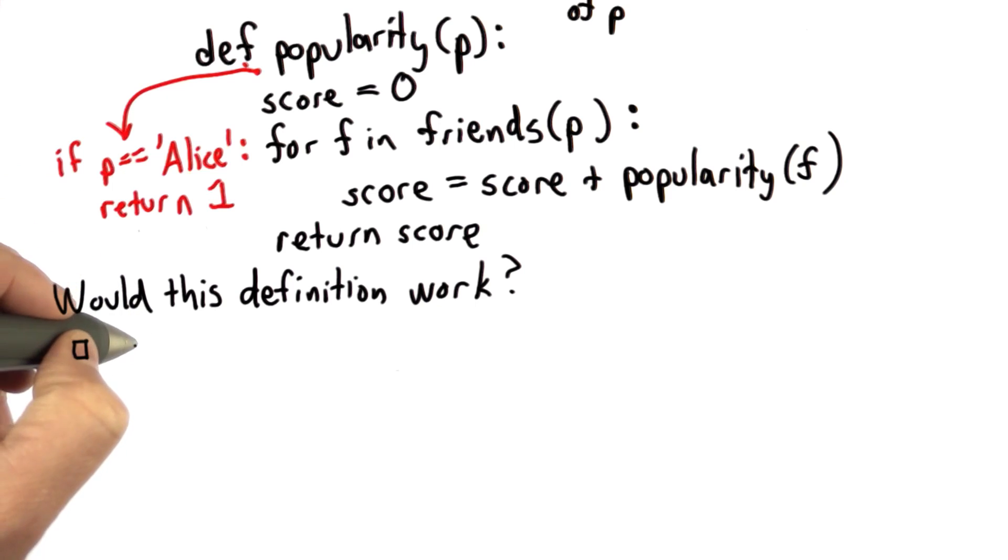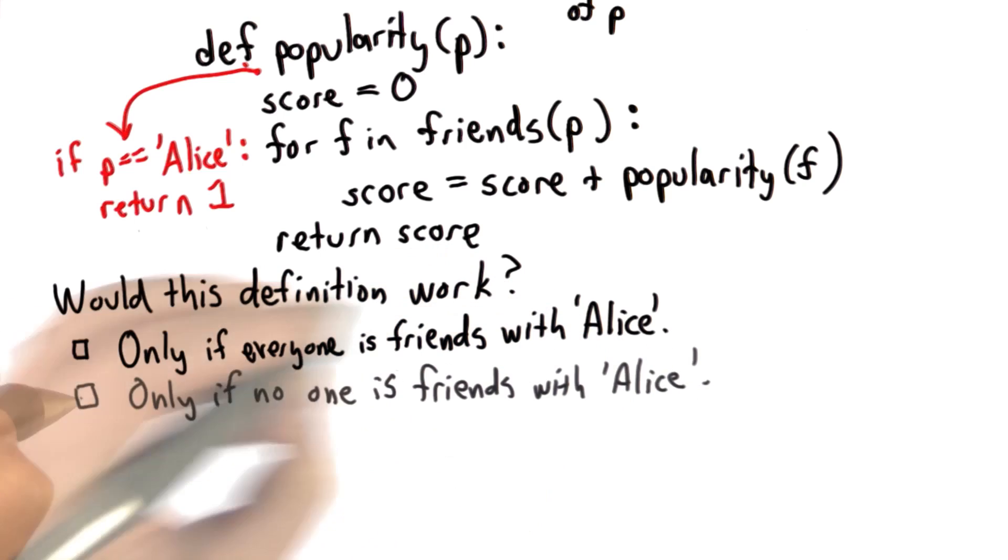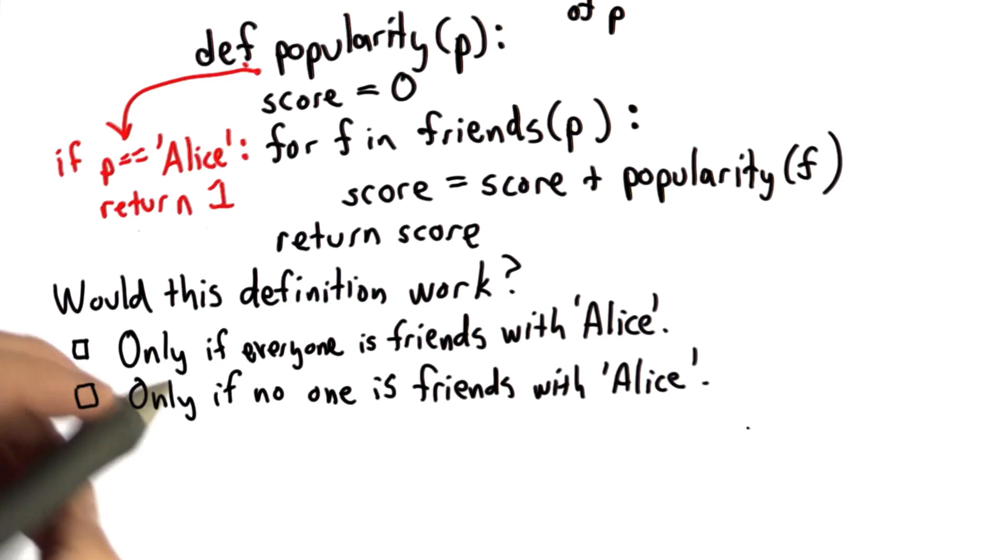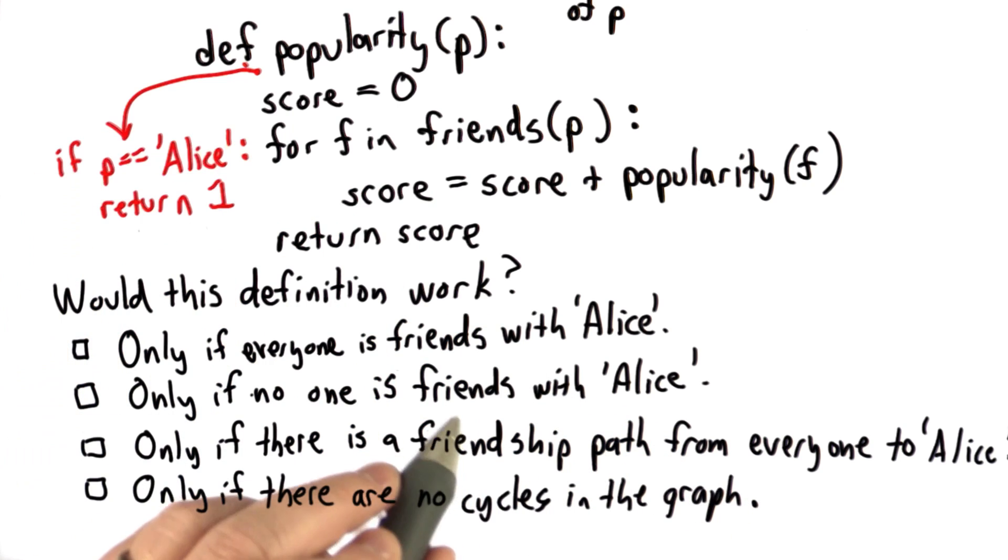The possible answers are only if everyone is friends with Alice, only if no one is friends with Alice, only if from every person in the network there's some way that you can follow links that eventually reaches Alice, only if there are no cycles in the graph, so there's no way to start from one person and end up at the same person by following friendship links. And the final choice is no, that there's really no situation where this definition works well.